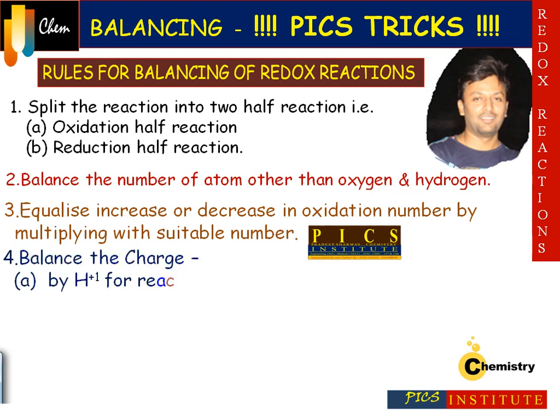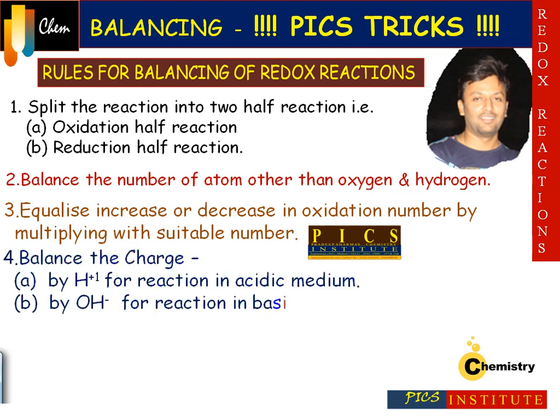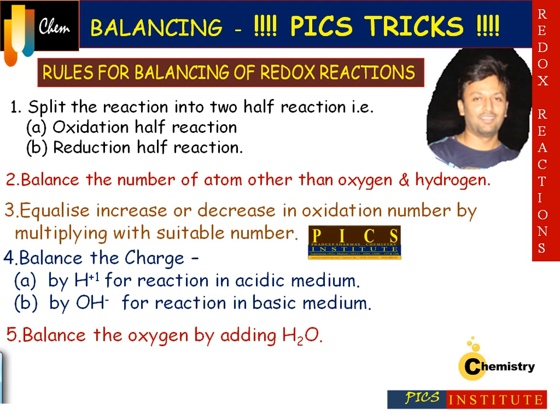Step number four: balance the charge. This can be done by two methods — by H⁺ ion for reactions in acidic medium, or by OH⁻ ion for reactions in basic medium. In the last step, balance oxygen by adding water to whichever side is deficient in oxygen.